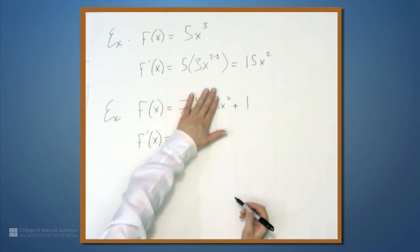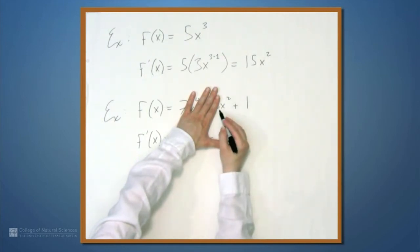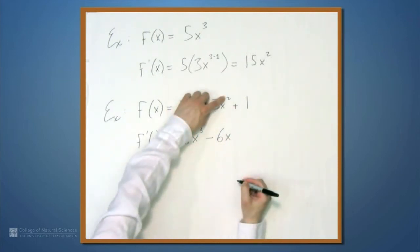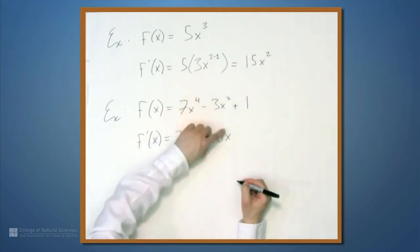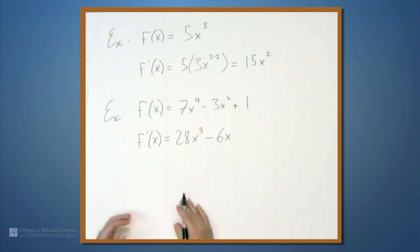Minus, now what happens here? Forget about the 3 for the moment. The derivative of x squared, the 2 comes down out front, so we have 2 times 3, which is 6, times x to the 2 minus 1 power, which is just 1, which I won't write at all. And then plus the derivative of 1, but remember 1 is a constant, so the derivative is 0. So that's it. The derivative of f is 28x cubed minus 6x.